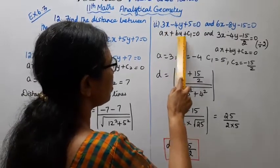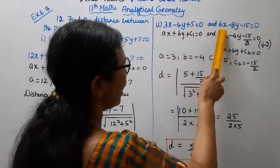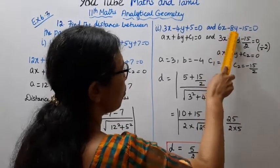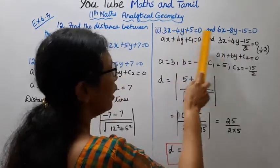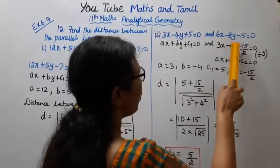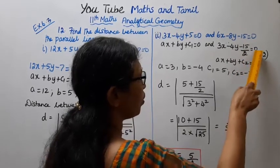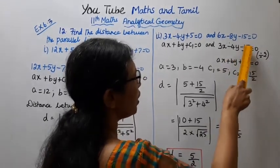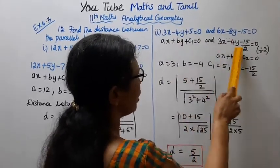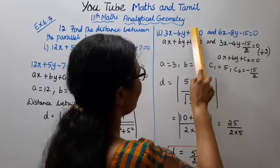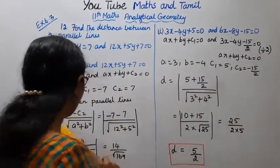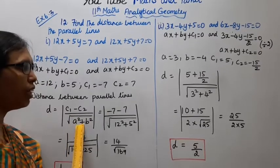This is Ax plus by plus C1 equal to 0. Divide by 2: A is 3, B is minus 4, C1 is 5, C2 is minus 15 by 2. The formula: D equal to mod of C1 minus C2 by root of A square plus B square.